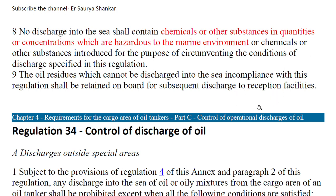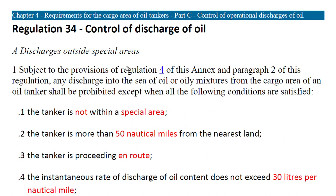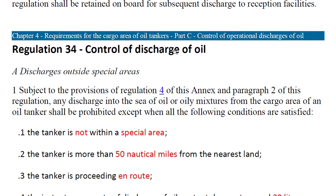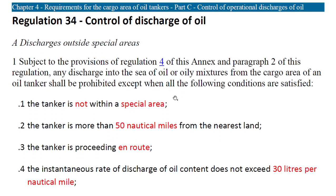Now moving to regulations for the cargo area of oil tankers — this is for the cargo area, whereas what we discussed before was for the machinery space. This falls under Part C again, 'Control of Operational Discharge of Oil,' Regulation 34: Control of Discharge of Oil. Any discharge into the sea of oil or oily mixture from the cargo area of any oil tanker shall be prohibited.